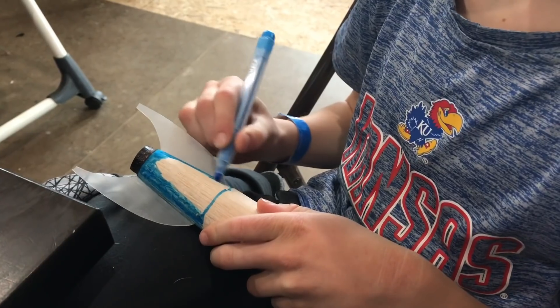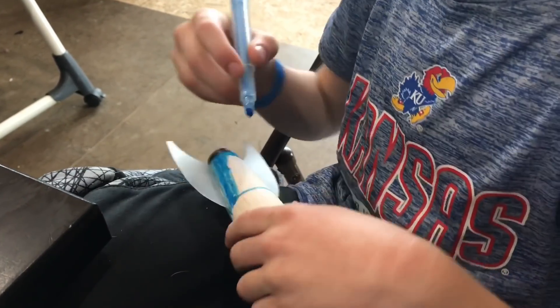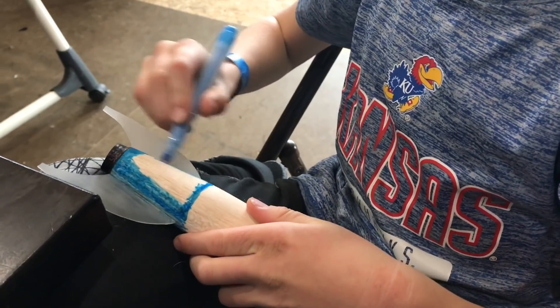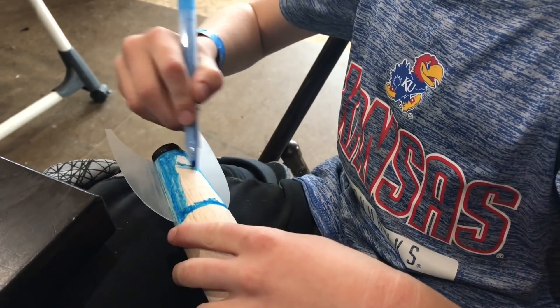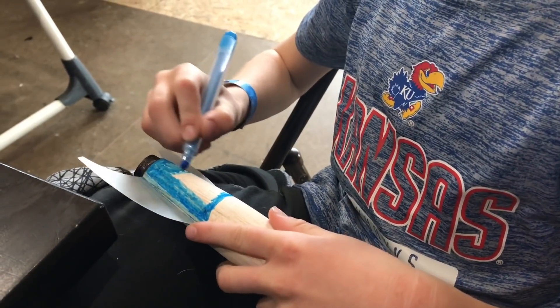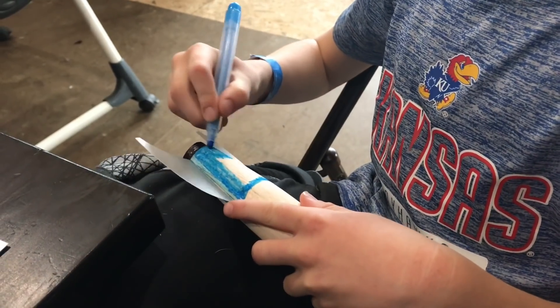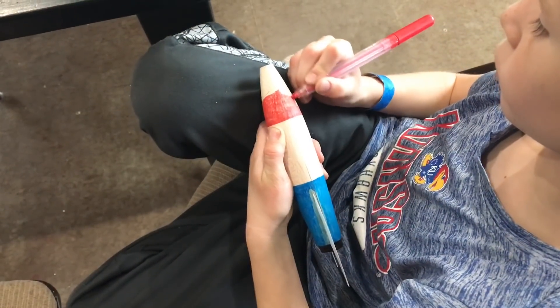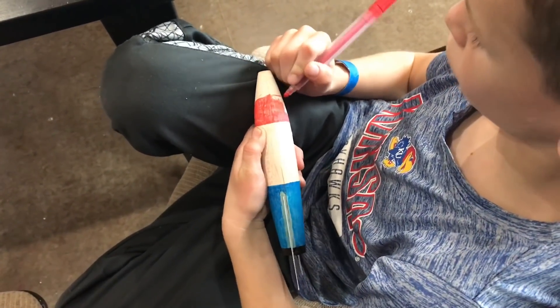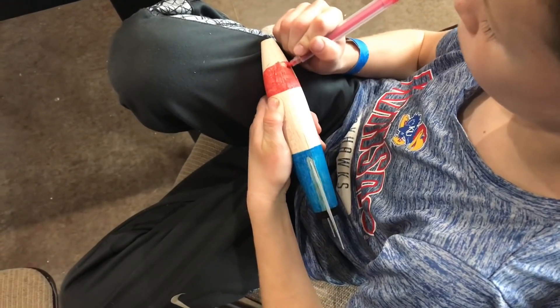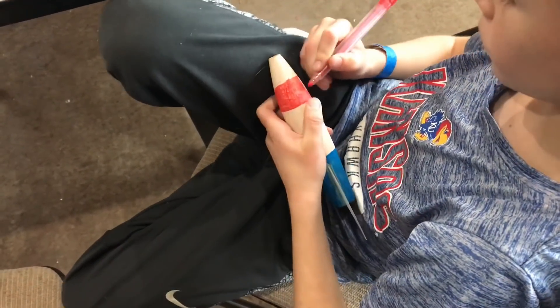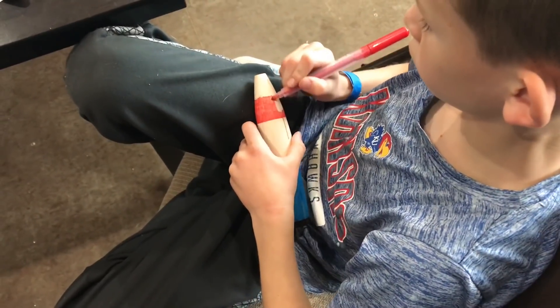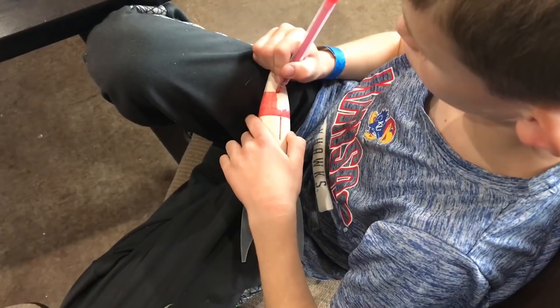So this year we're trying just regular markers to add the color on the rocket. So it's a good way to get even color all the way around. You can do all different kinds of custom designs. It doesn't add significant weight to the overall rocket. And it's something that you can have your boys do on their own. They don't need your help to do this.